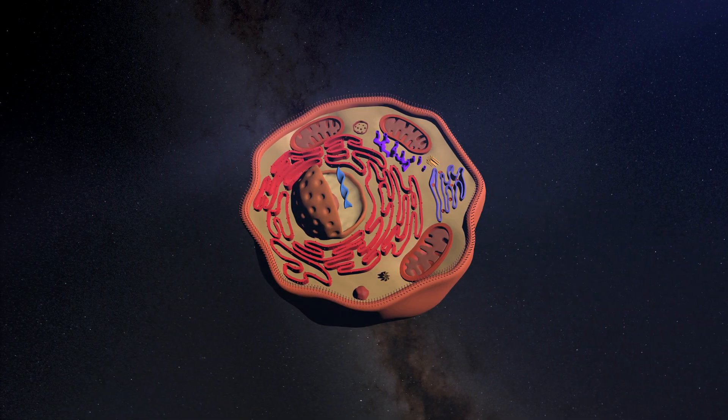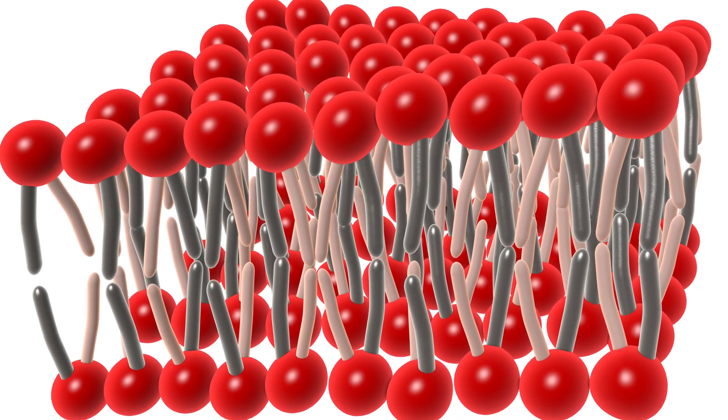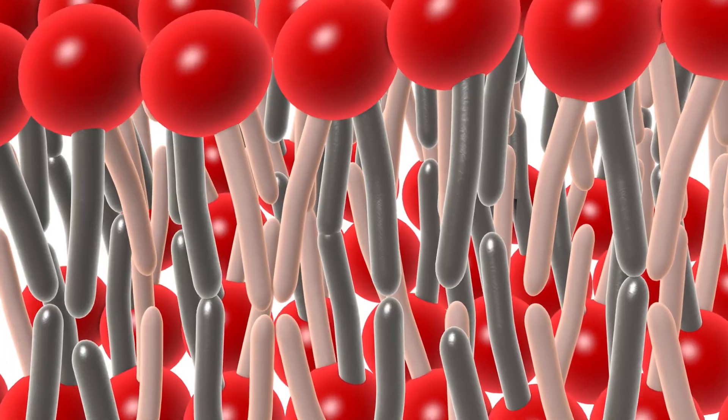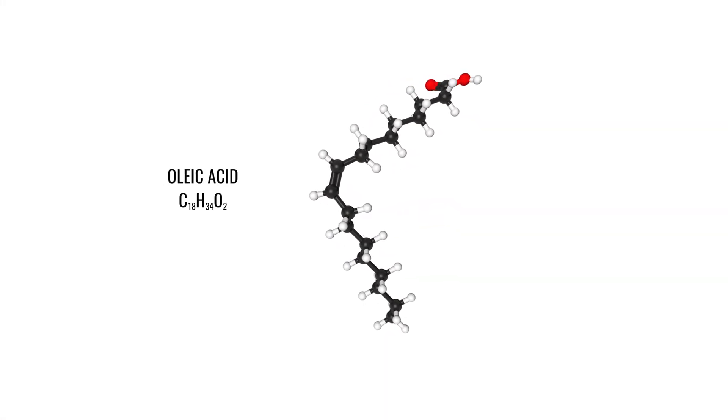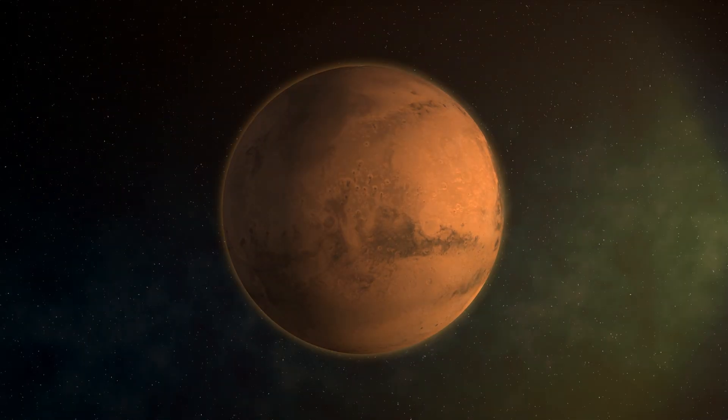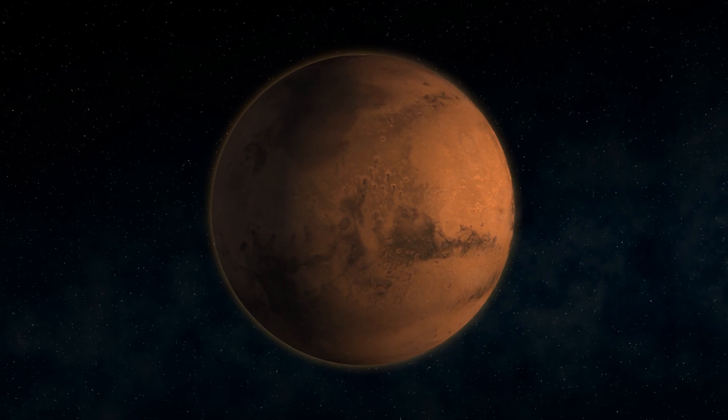Life on Earth is made from cells. Cells are surrounded by membranes, and cell membranes contain large organic molecules called fatty acids. Could these building blocks of life also exist on Mars?